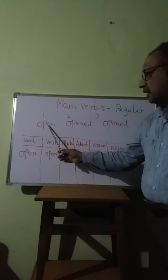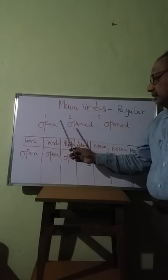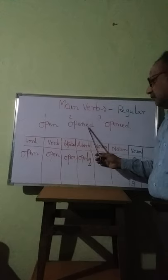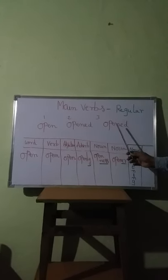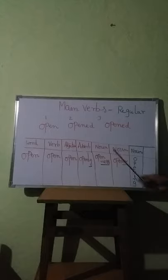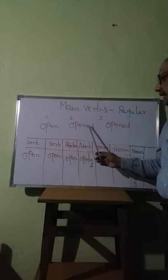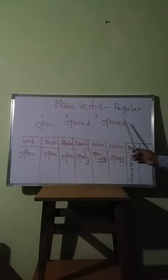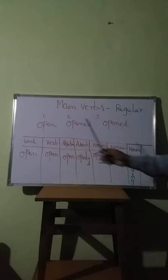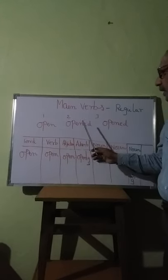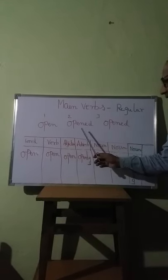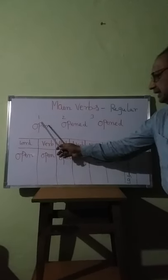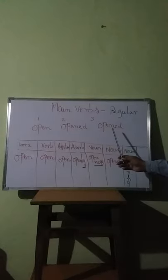The first form is also called the infinitive. When the ED form is there for the second form, the ED form must also be there for the third form. So, whenever you have the ED form for the second form, you will automatically add the ED form to the third form. In this way: open, opened, opened. Since the second form and the third form are ED forms, this verb is called a regular verb.